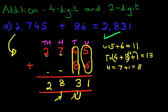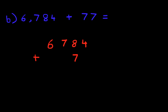Let's clear this screen and move to our second example. What is 6,784 plus 77? So the first stage, as you know by now, we're going to write this question in the vertical format. Let's do that over here.